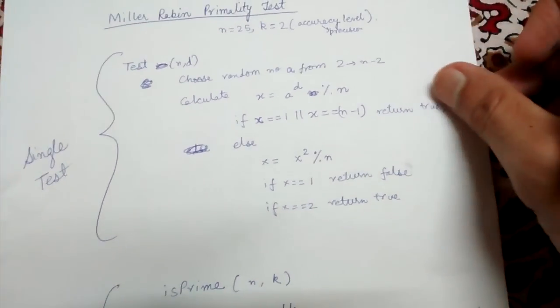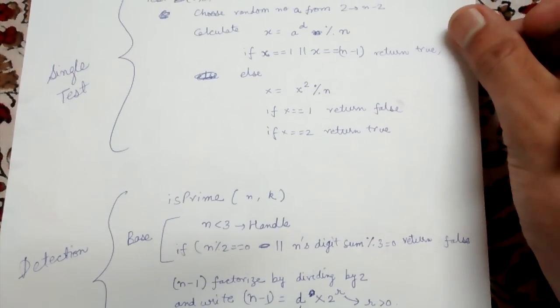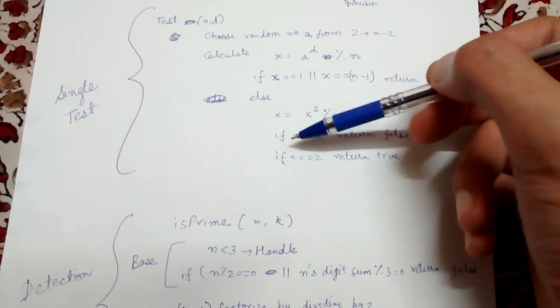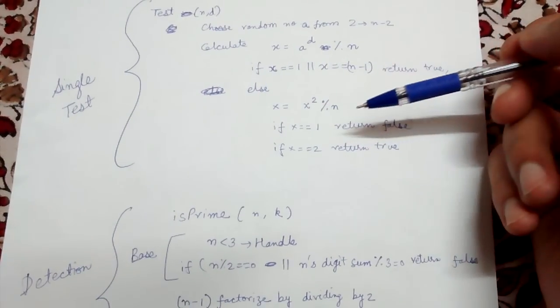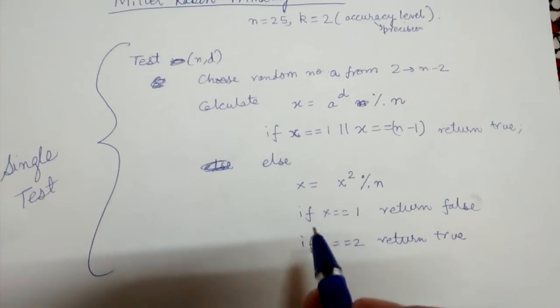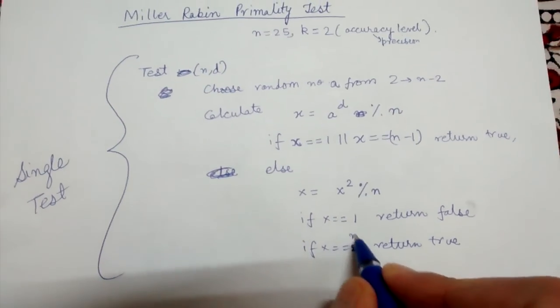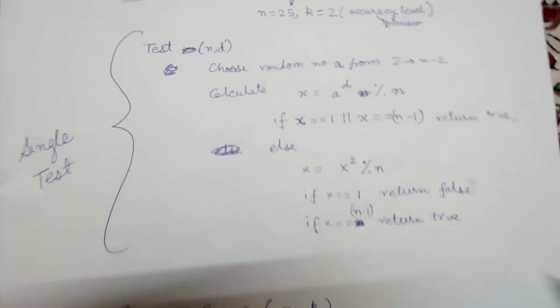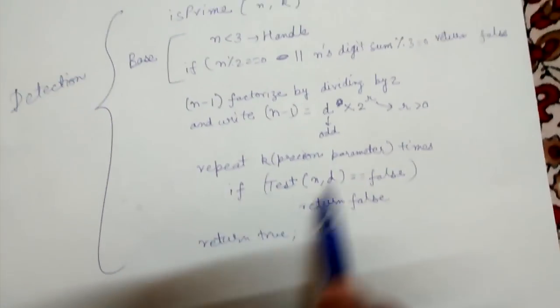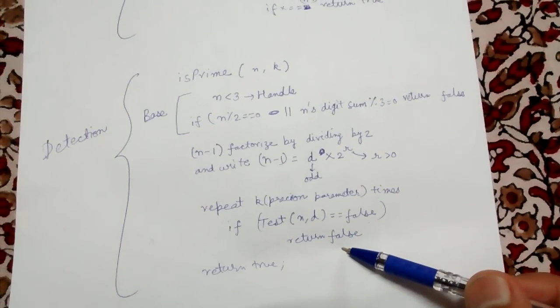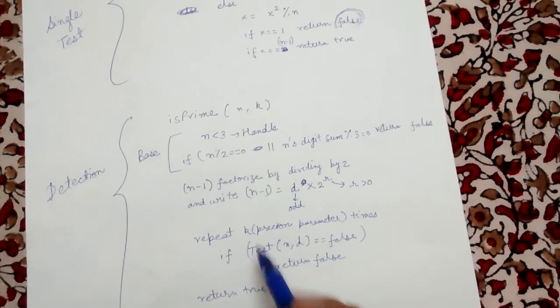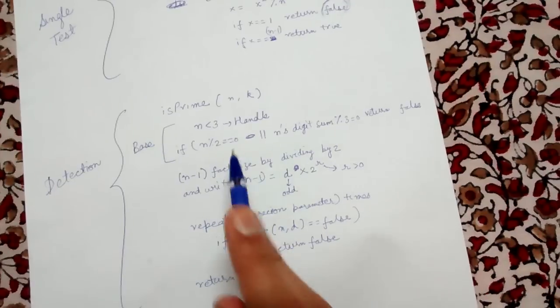Otherwise, we repeatedly compute x = x² mod n. If x equals 1, we return false. If x equals n minus 1, we return true. As soon as we receive a false in any of these iterations — that is, x equals 1 without having reached n minus 1 first — we return false, meaning the number is composite. If we never receive a false and keep getting x equal to n minus 1, we finally return true, meaning the number is prime.